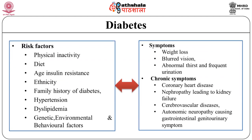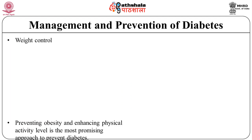Other risk factors associated with development of type 2 diabetes include physical inactivity, diet, increasing age, insulin resistance and ethnicity, family history of diabetes, hypertension, dyslipidemia, and genetic, environmental and behavioral factors. The most common symptoms of diabetes in older adults include weight loss, blurred vision, abnormal thirst and frequent urination. Chronic symptoms include coronary heart disease, nephropathy leading to kidney failure, cerebrovascular disease and autonomic neuropathy causing gastrointestinal and genitourinary symptoms.